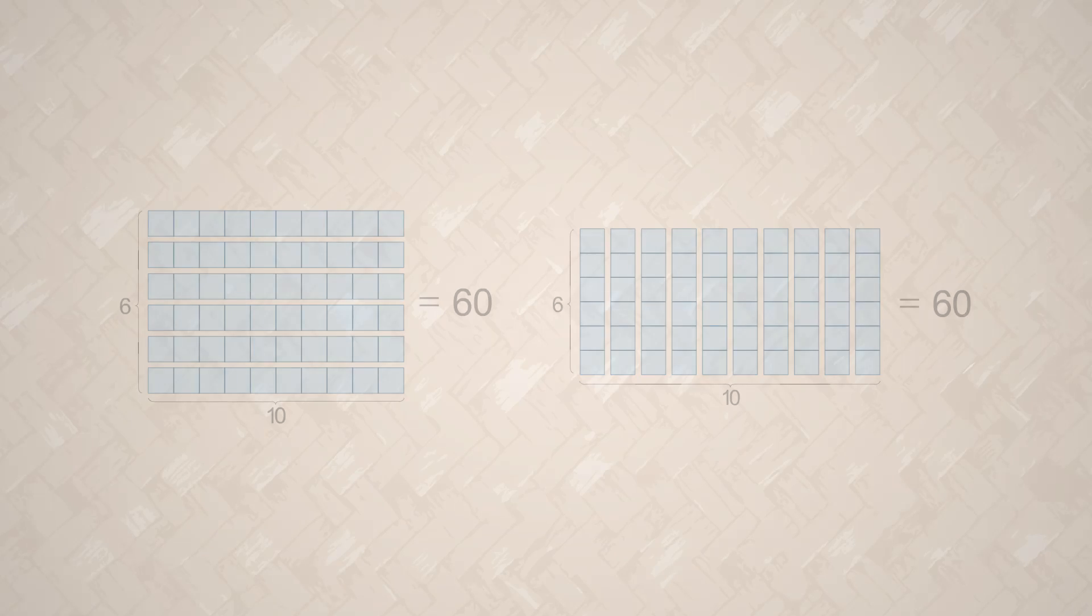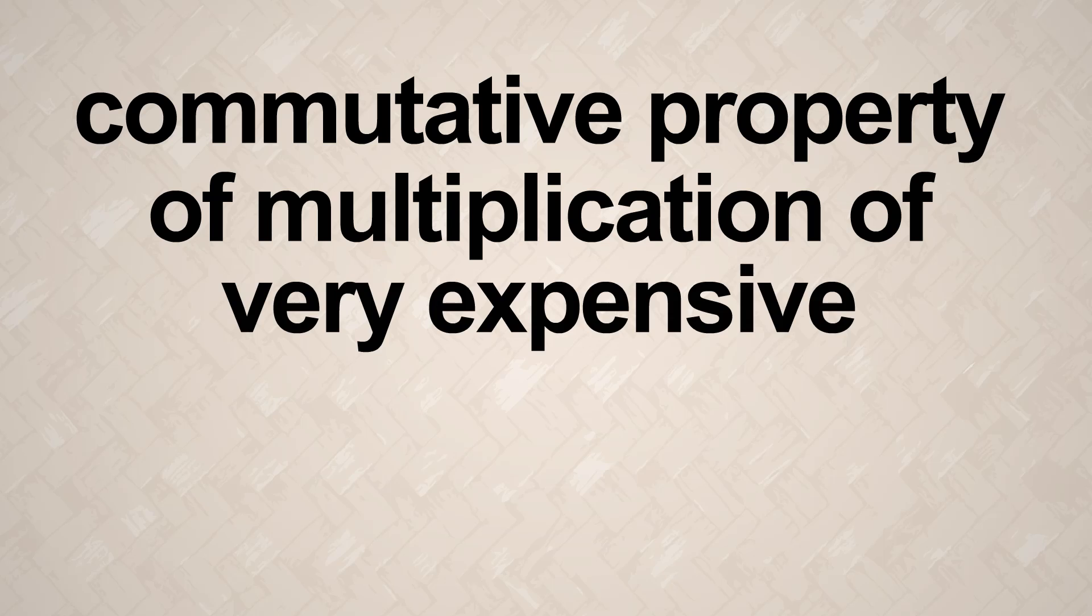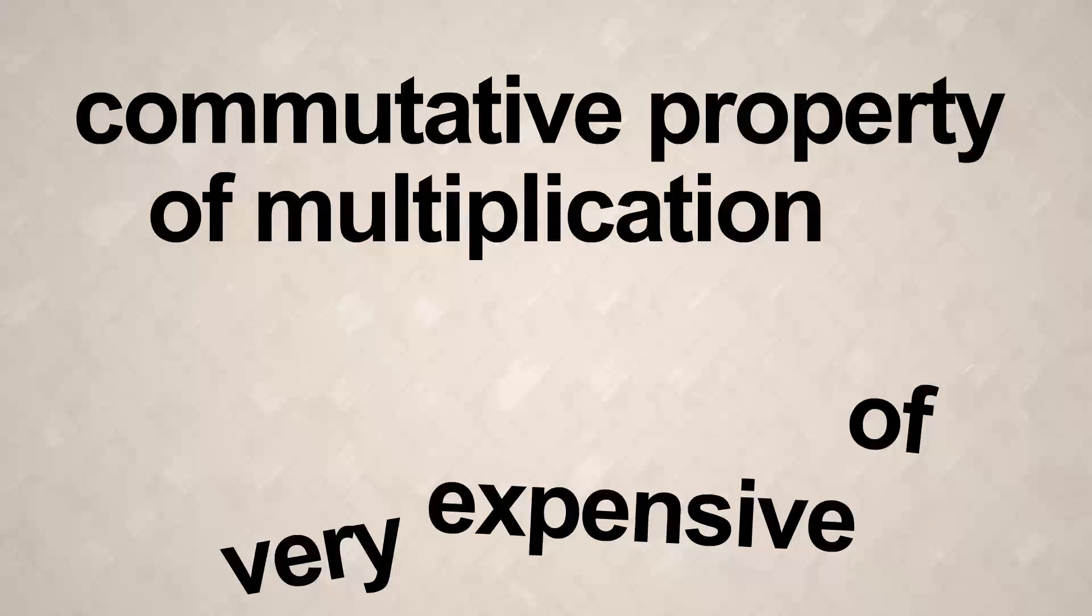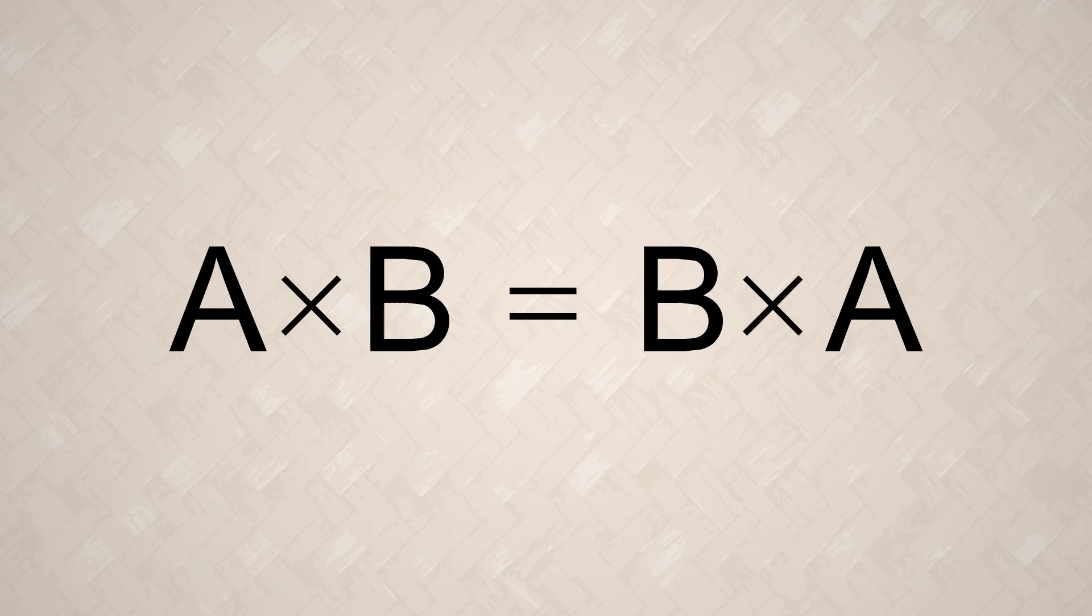We originally called this The Commutative Property of Multiplication of Very Expensive Imported Bongo Ponganian Tiles. After a while, we decided to shorten the name to The Commutative Property of Multiplication. We can write this property as A times B equals B times A.